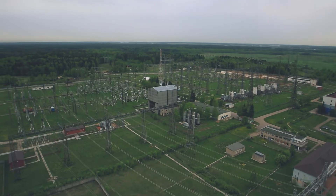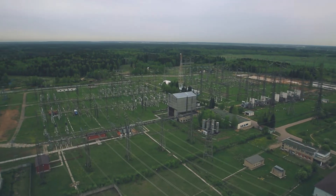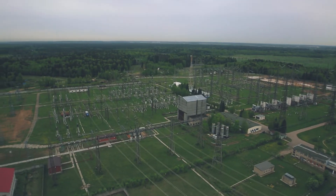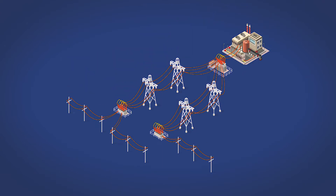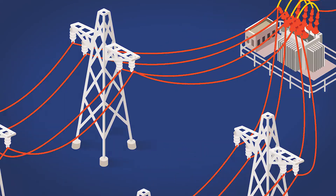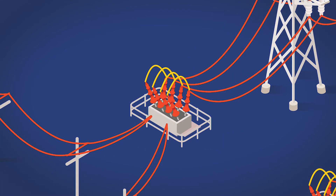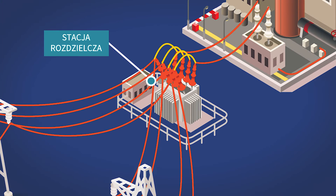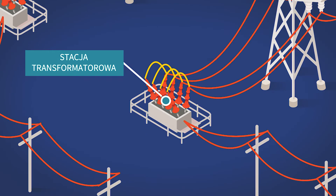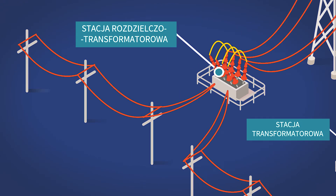Jednym z elementów sieci elektroenergetycznej jest stacja elektroenergetyczna. Stacje te mogą służyć do rozdziału lub przetwarzania energii, ale mogą spełniać także obie role. Pierwszy typ stacji to stacja rozdzielcza. Stacja przetwarzająca to stacja transformatorowa. Stacja pełniąca obie funkcje to stacja rozdzielczo-transformatorowa.